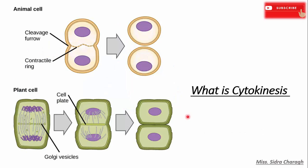The next is cytokinesis. Cytokinesis is the final stage of cell division and it is completed after the completion of nuclear division. Typically, at the end of nuclear division, two daughter nuclei occur at the opposite poles of the cell. Therefore, cytokinesis is responsible for the division of cytoplasm of the mother cell between these two daughter nuclei, and this process of cytoplasmic division also occurs in an equal manner.